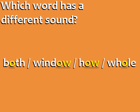Both, window, how, whole, toll. The different word is 'how,' because the other three words have the OH sound and 'how' has the OW sound. We'll learn that in a future lesson.